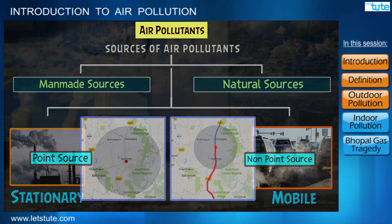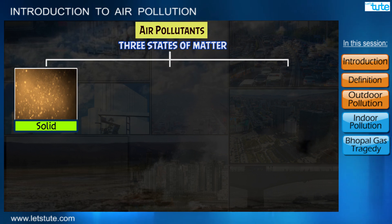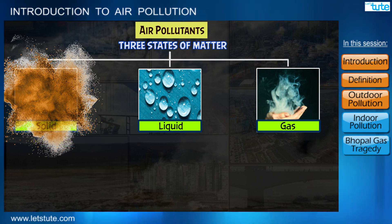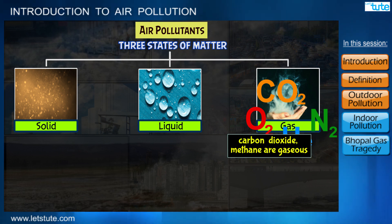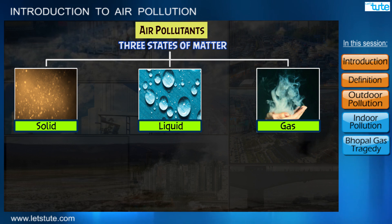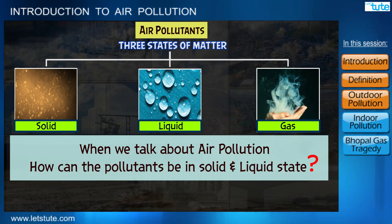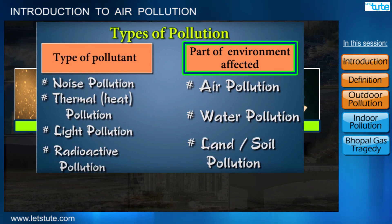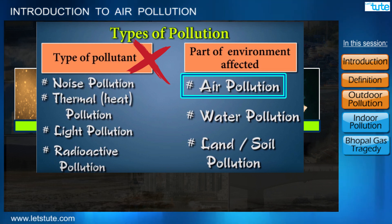These pollutants can exist in any of the three states of matter — that is, solid, liquid, or gas. For example, dust or pollen particles are solid; aerosols or sprays that we use release tiny liquid droplets; and various gases like carbon dioxide and methane are gaseous in nature. Generally there is a misconception that pollutants can only be in the gaseous state when we are talking about air pollution. But no — here the air habitat, that is our atmosphere, is getting polluted, and so it is called air pollution. It is not about the type of pollutant that is introduced. I hope you are getting the difference.